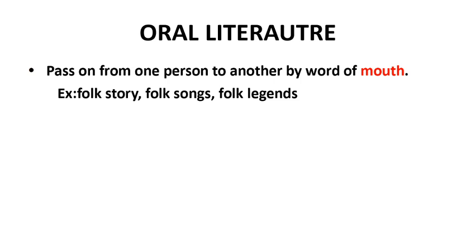Oral literature passes experiences from one generation to another. These usually contain heroic stories of people like Kempe Gauda, Tipu Sultan, Sankolli Raya, and Kitturani Channamma. Every place has its own legend. Different places like Shravanabelagola, Benduru, Patakalu, Gokarna, and Mysore each have stories explaining how those names came to those places.